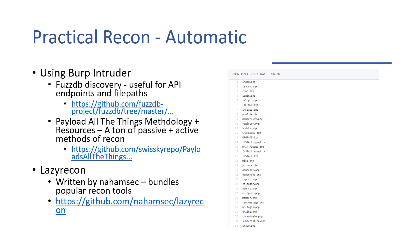The first resource is FuzzDB Discovery, which has a ton of useful API endpoints and file paths to look for. We can see a bunch of common PHP files — your WordPress login file, an index, some database install scripts that haven't been properly removed. When we're doing this, we're looking for API endpoints and files that don't necessarily get called by our main page but that still exist on the server. Then there's Payload All The Things, which has a ton of useful information including resources, endpoints, but also a lot of information on passive versus active methods of recon.